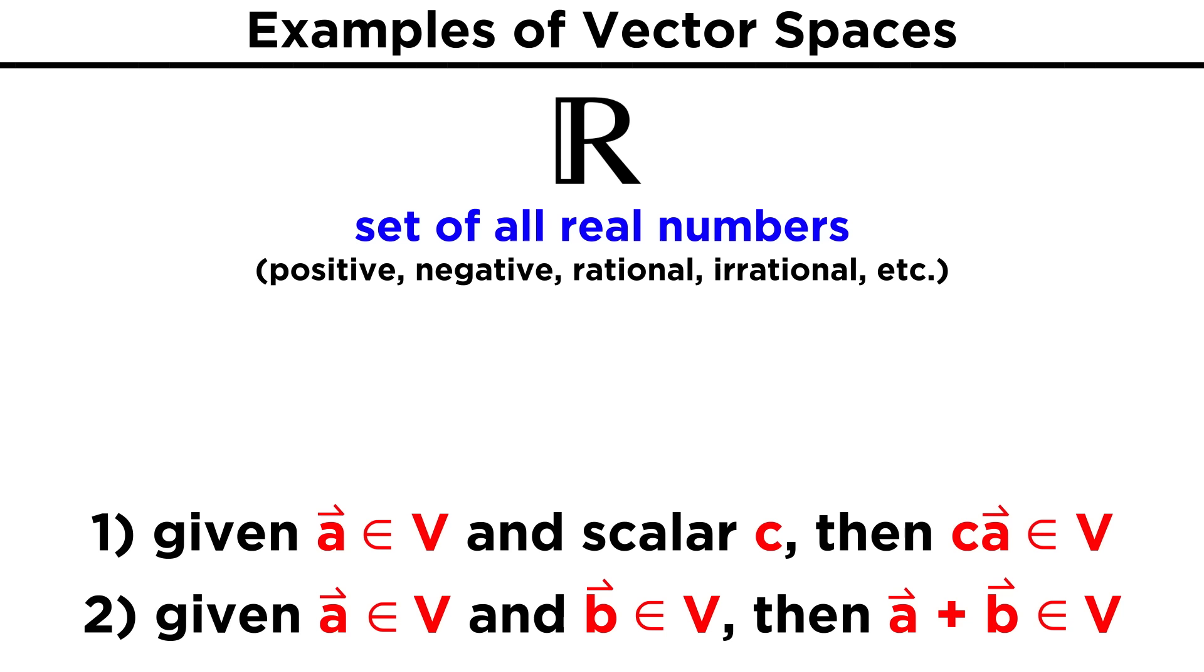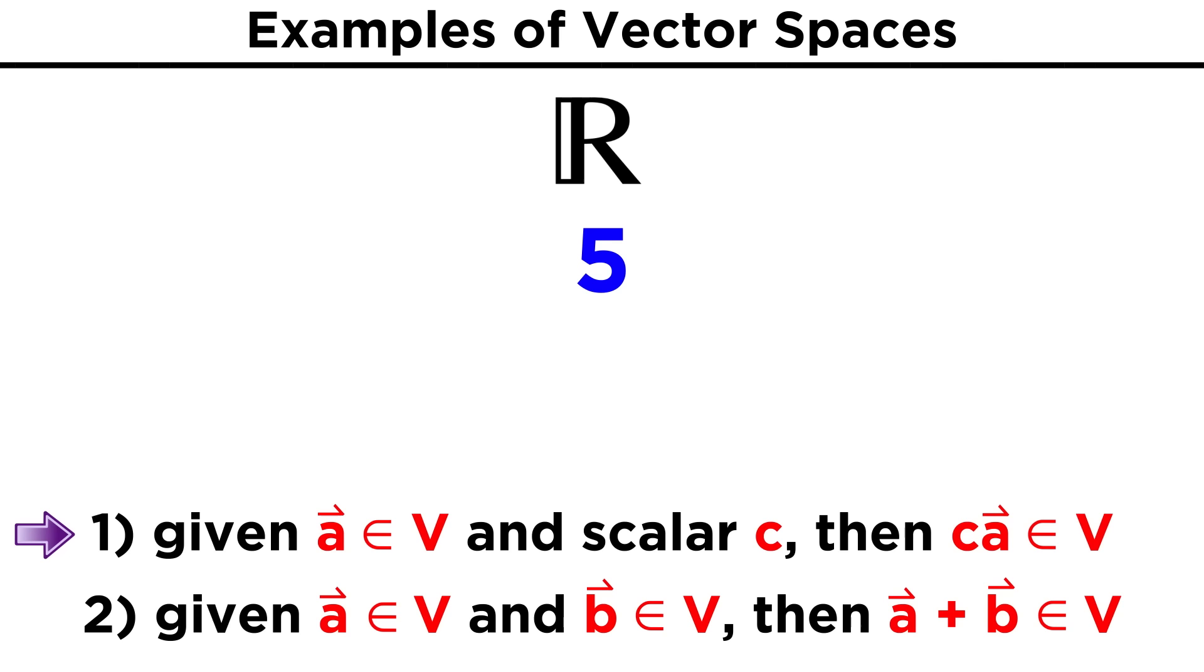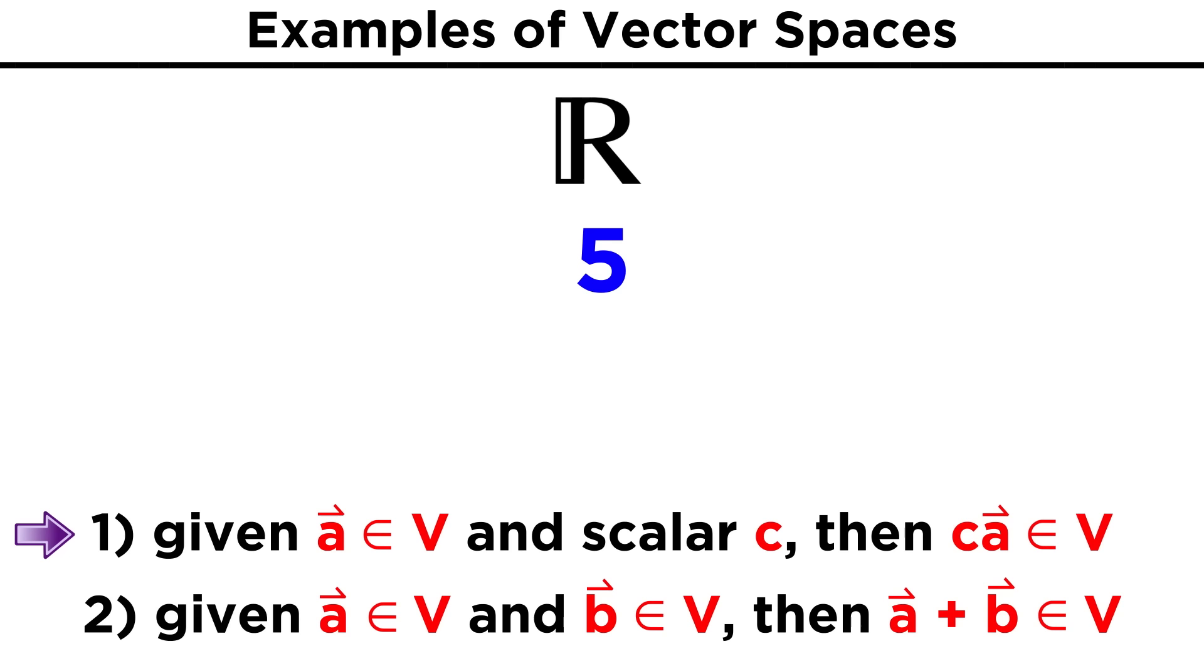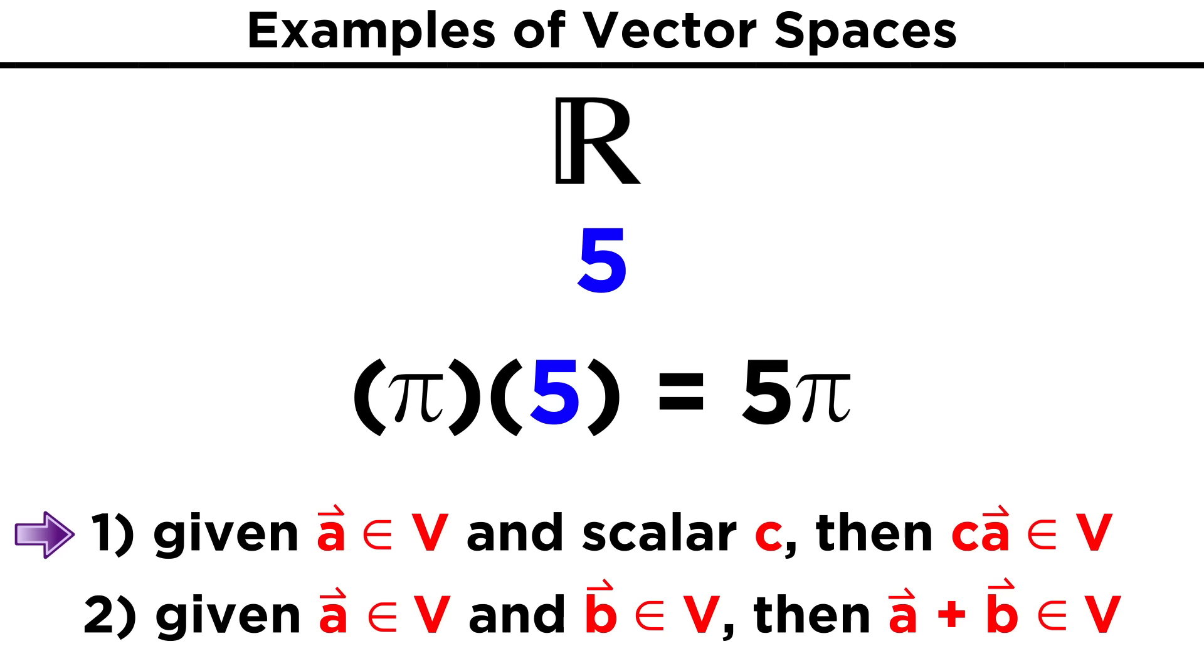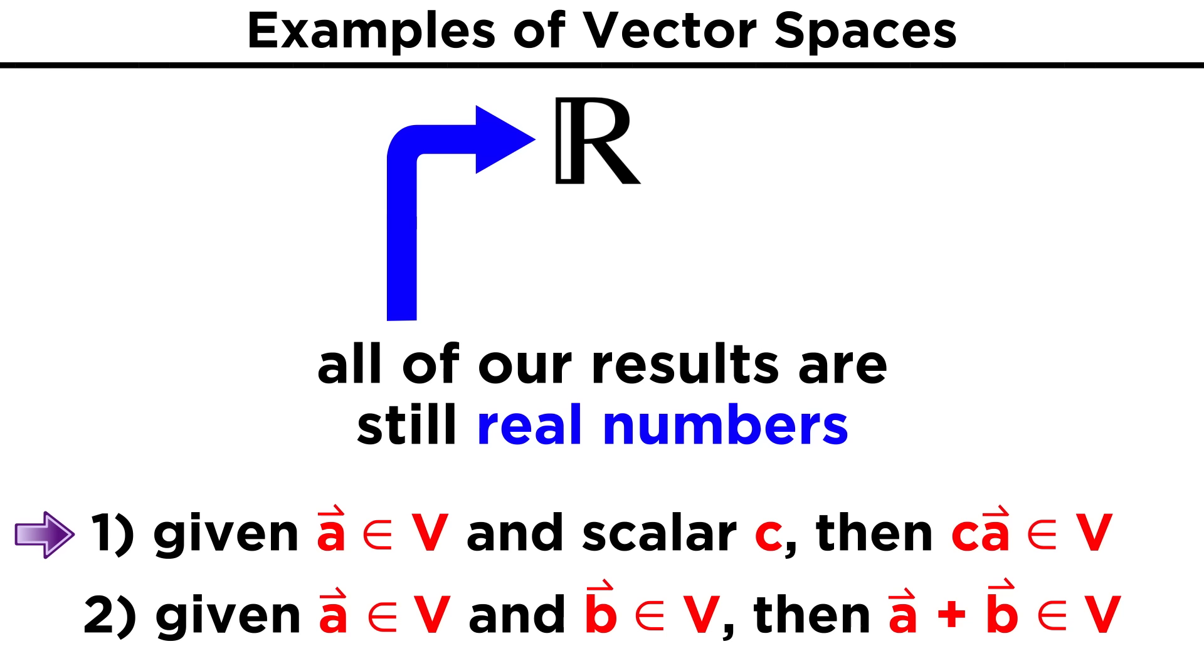Let's take some time to examine these properties. At this point it will be useful to introduce this R symbol, which represents the set of all real numbers, meaning positive, negative, rational, irrational, all the real numbers we talked about when we discussed the types of numbers in a previous tutorial. We can pick any element of this set, a real number, and multiply it by any scalar we want. Notice that all of our results are still real numbers. This is because no matter what we choose, a real number times a real number is still real. So the set of real numbers satisfies the first closure property.